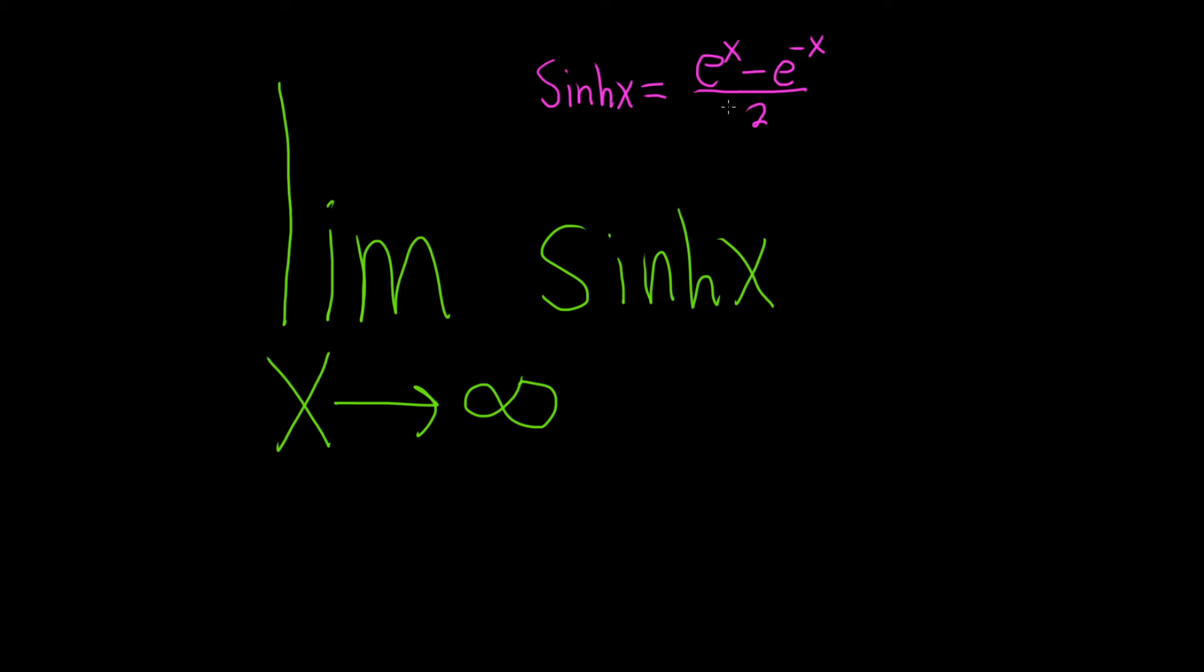So it's half the difference of e to the x and e to the negative x. Just a very clever way to say it. So let's go ahead and substitute this in for sinh in our limit. So this is the limit as x approaches infinity of e to the x minus e to the negative x over 2.